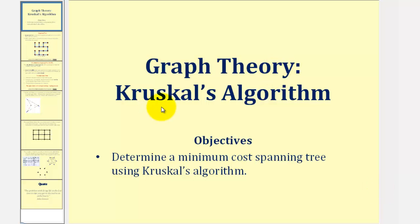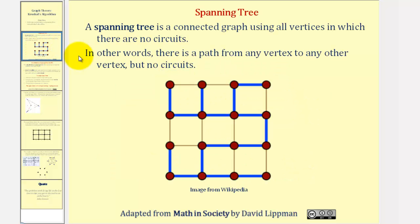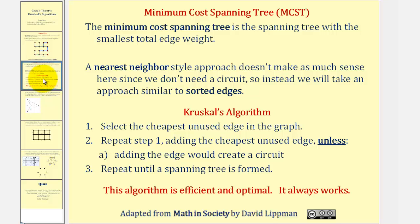Welcome to a lesson on Kruskal's algorithm, used to find the minimum cost spanning tree. For review, a spanning tree is a connected graph using all vertices in which there are no circuits. In other words, there's a path from any vertex to any other vertex but no circuits. The dark blue path here is an example of a spanning tree. The minimum cost spanning tree is the spanning tree with the smallest total edge weight.